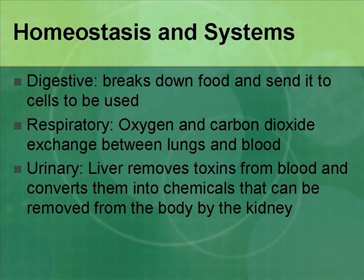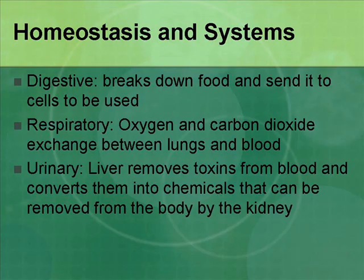Here are some examples of homeostasis with different body systems. The digestive system breaks down food and sends it to cells to keep them functioning properly, so these systems help keep each other in balance. The respiratory system has the exchange of oxygen and carbon dioxide between the lungs and the blood, keeping everything balanced.